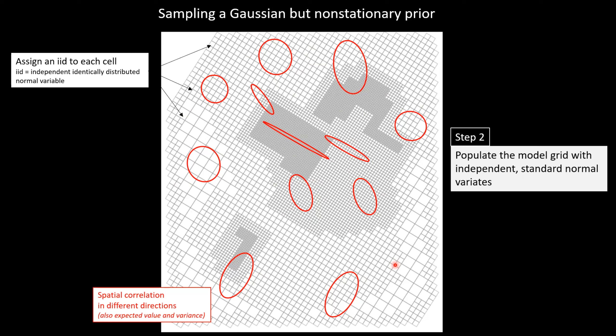Then, as before, we assign an IID to every cell — Gaussian deviates. We do this many times. The first time we populate the model with a set of IIDs we generate one stochastic field; then we populate with another set of IIDs using the same kernel function to generate another stochastic field. This is repeated for each stochastic realization, all based on site conceptualization studies as encapsulated in this hydrogeological mud map.